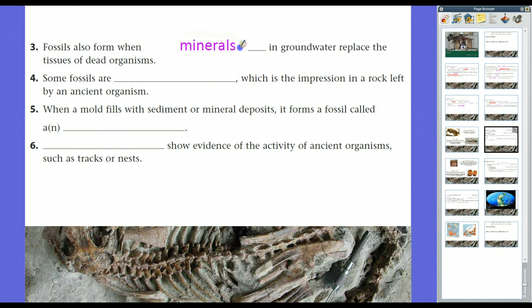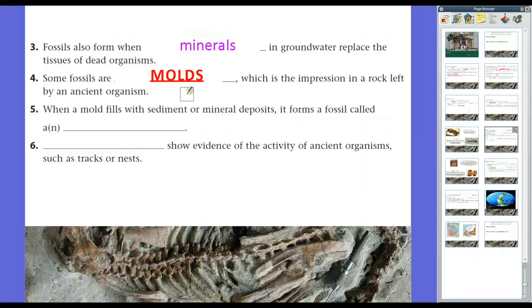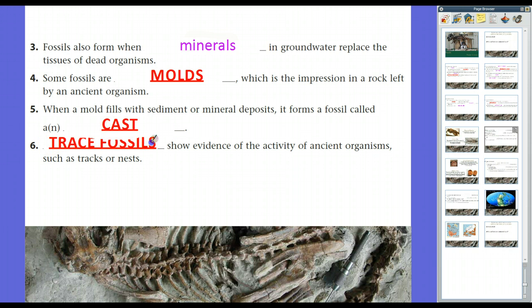Another type is fossils also will form when minerals and groundwater replace the tissues of dead organisms. Some fossils also are molds. Mold and cast fossils are impressions in rocks left by ancient organisms. A mold, it's kind of like a jello mold. So you go to make jello, and you're going to make the Christmas tree. You get the mold, and you pour in the jello. You throw it in the fridge, and it hardens up, or gelatinizes. And the gelatin, you shake it out. It falls out. Oh, look. There's our little Christmas tree jello. Well, that jello would be a cast. So when the mold fills with the sediment or mineral deposits, it forms a cast.